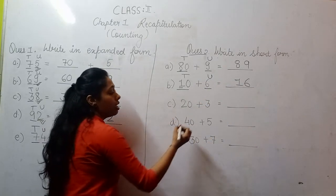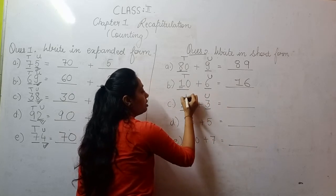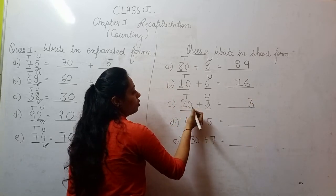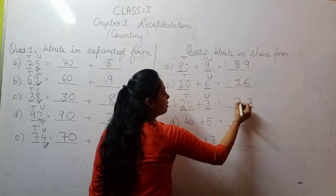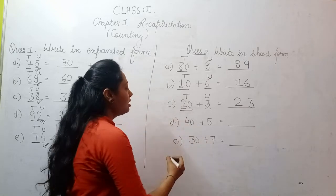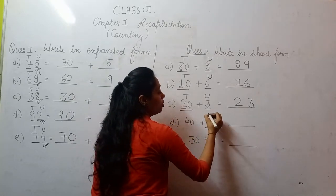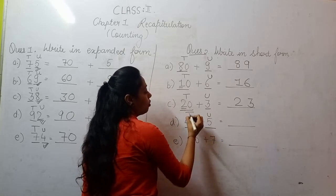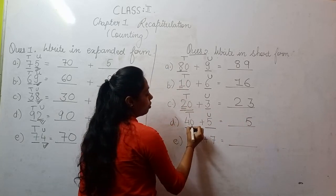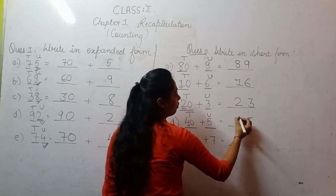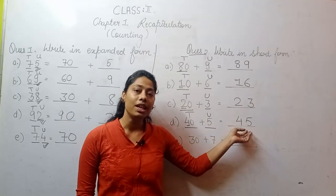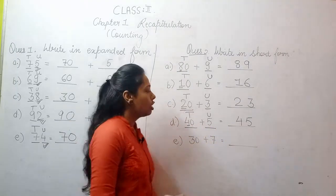Moving to C part: this is your units place and this is your 10th place. Write the units place digit at the back, and for 20, do not look at the 0 — 2 comes in front of it. So 20 plus 3 is 23. Similarly, D part: units place is given as 5, and 10th place is given as 40. Write 5 at the back, and from 40 ignore the 0 — what remains is 4. So 40 plus 5 gives you 45 as your answer.